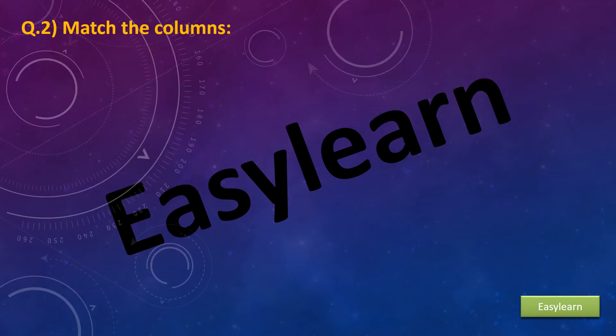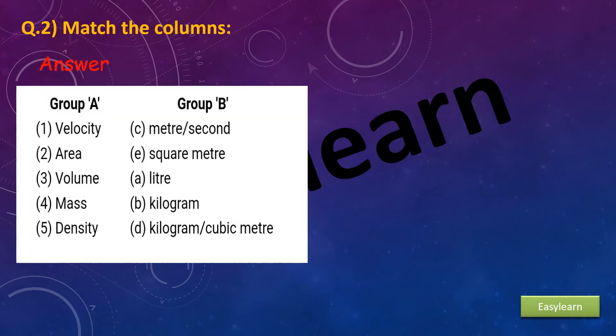Question 2: Match the columns. Answer: Velocity, meter per second. Area, square meter. Volume, liter. Mass, kilogram. Density, kilogram per cubic meter.